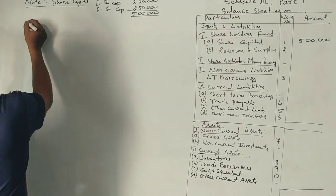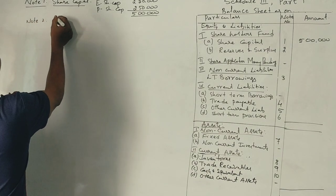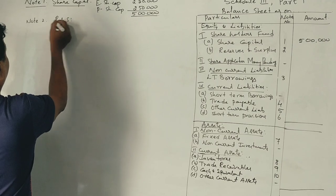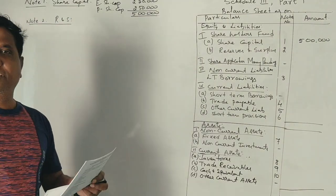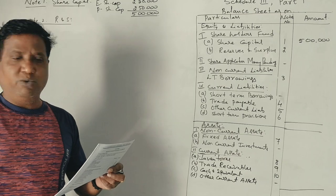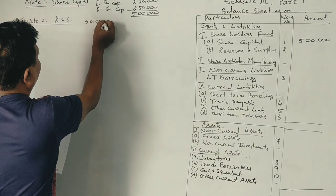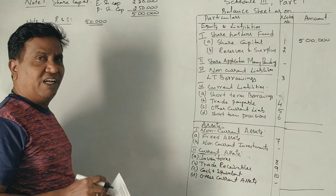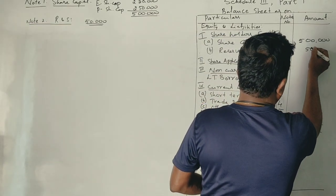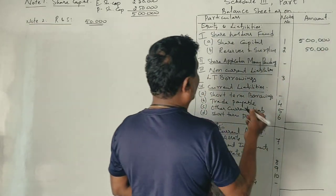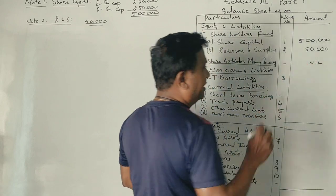Note number 2 is reserves and surplus. Here, reserves and surplus is ₹50,000. Now, share application money pending — what is the share capital?